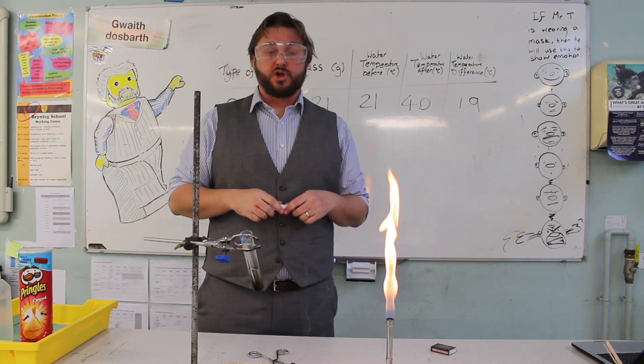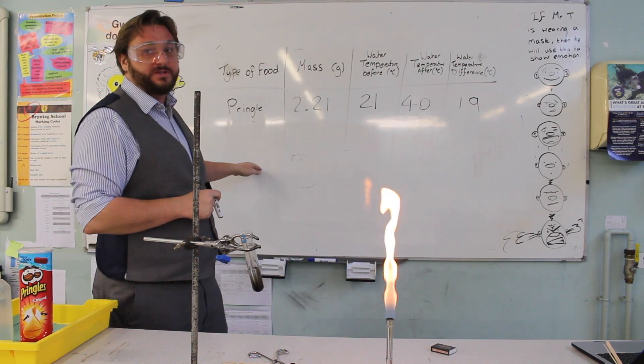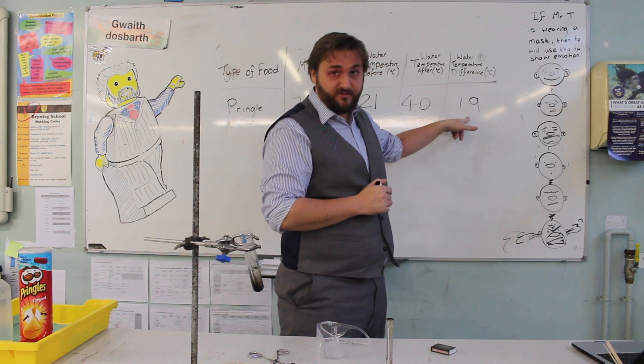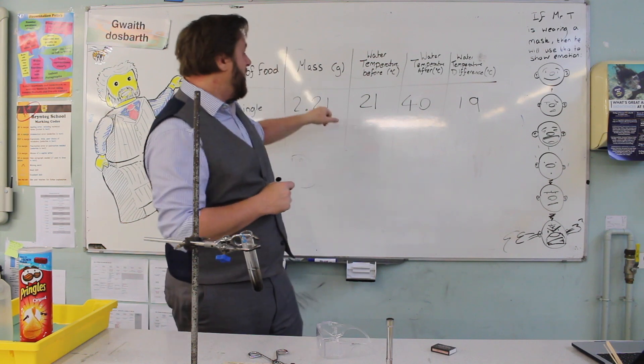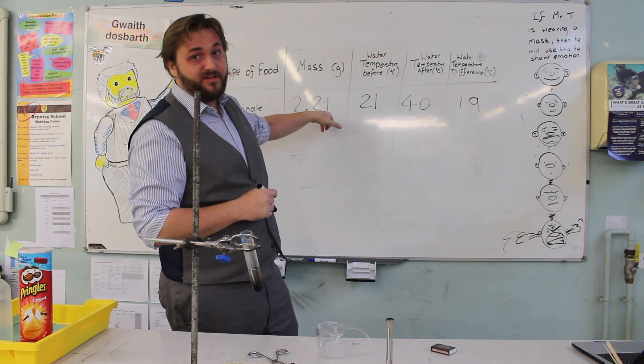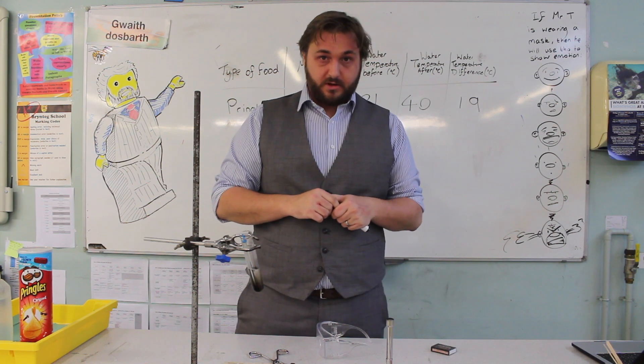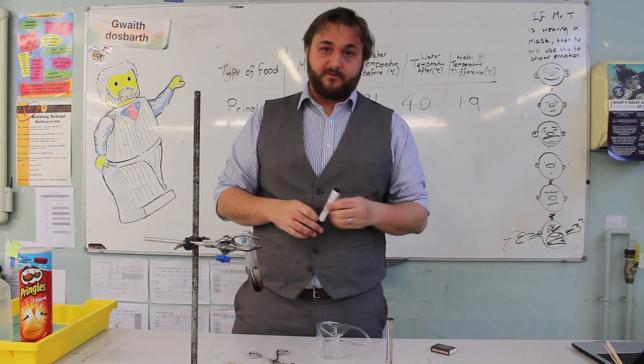In normal circumstances, you'd repeat this a few times with each piece of food and you might have different types of food that you're testing. After the experiment, once you've calculated the water temperature difference, how much it was increased by, you can use that information as well as the weight of the crisp, as well as the weight of the water, which should be 20 grams, to work out how much energy exactly came out of the crisp.